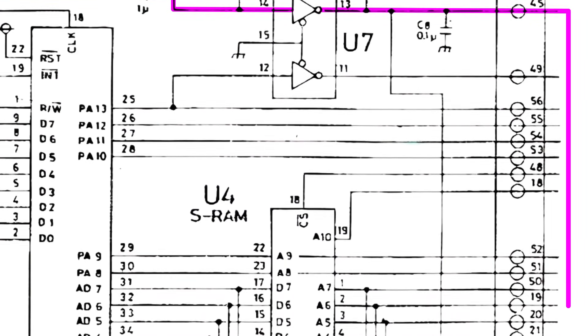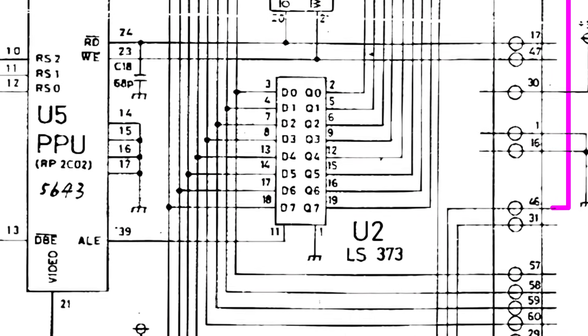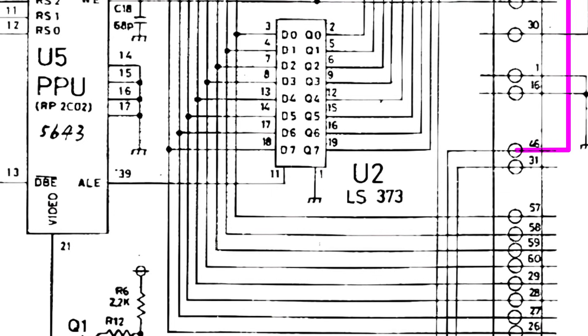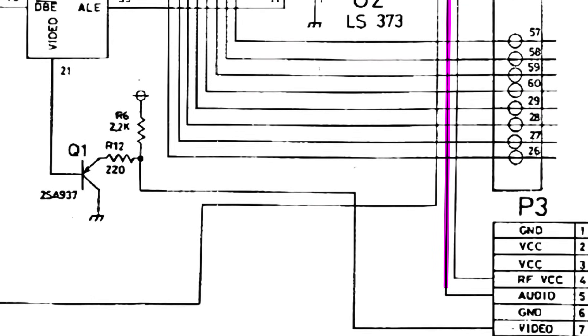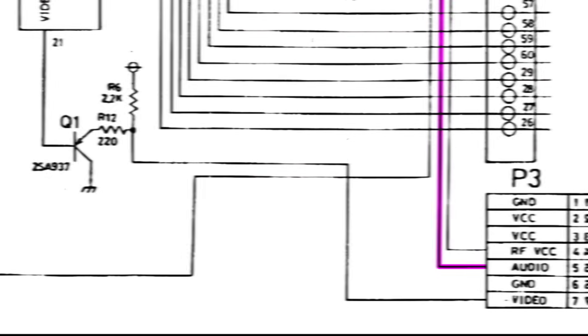After the cartridge is done with the audio signal, it passes it back into the Famicom on pin 46. And from there, the audio gets sent into the RF modulator for modulation and output to the TV. Because the audio coming back into the Famicom from the cartridge doesn't get mixed in with the expansion port, that means any audio coming from the expansion port won't include the cartridge audio.